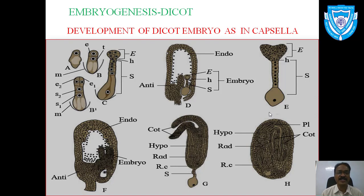The suspensor initial again divides and develops into two parts: the lower part toward the micropylar end, and the upper cell divides horizontally in a filament-like structure, developing into the suspensor and haustorium. The upper portion — the embryonal initial — undergoes three successive mitotic divisions and produces a group of cells in a spherical shape toward the chalazal end.